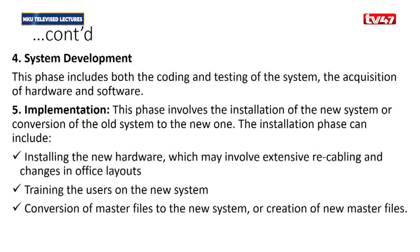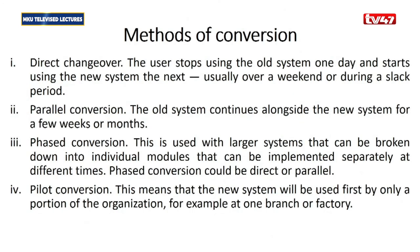Then the fourth phase is what we call system development, where you do the actual development of the software, coding and testing. And lastly, number five, you do what we call implementation — you want to implement the new MIS solution that you have developed. When implementing it, you can use four different methods. If you are implementing an MIS solution, you can do what we call direct changeover — you stop using the old system today and tomorrow you start using the new one, so it has its pros and cons. Or you can do what we call parallel conversion — you use the two systems for some time, the old and the new alongside, for a few weeks or months so that you can know how to go about it or areas to improve.